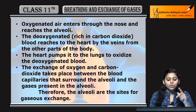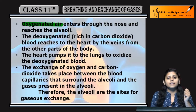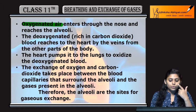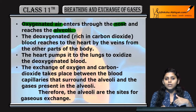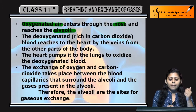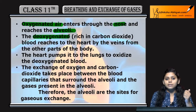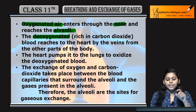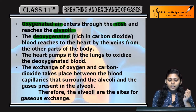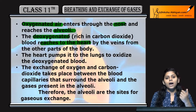Diffusion of gases occurs in the alveolar region. We inhale oxygenated air through the nose, and it reaches the alveolar region. The blood that arrives there is deoxygenated — meaning it is carbon dioxide-rich and oxygen-poor. This deoxygenated blood reaches the heart.